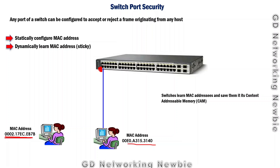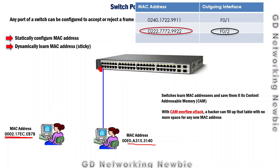From our basic knowledge of switches, switches learn MAC addresses and save them in a MAC table, stored in memory known as Content Addressable Memory (CAM). When the next frame arrives, the switch uses this table to decide where to forward it. A hacker can use different techniques to fill up that MAC table completely, leaving no memory for new MAC addresses — this is known as a CAM overflow attack.